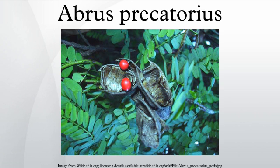Names: Abrus precatorius has different names in various Indian and other languages. In Arabic it has several names; in Assamese it is called Latoumini; in Bengali it is called Kunch.